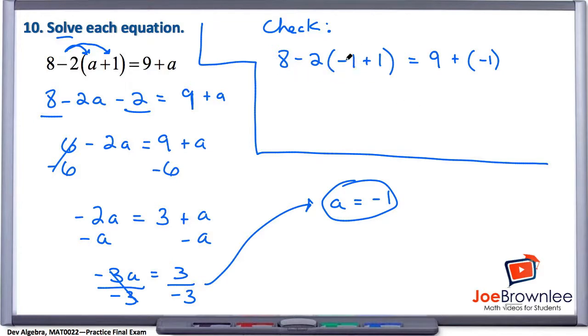Well, inside this set of parentheses, we have negative 1 plus 1. Negative 1 plus 1 is just 0, so we end up with 8 minus 2 times 0 equals, and here on the right-hand side, we have 9 plus negative 1, which is really 9 minus 1, so we have 8.